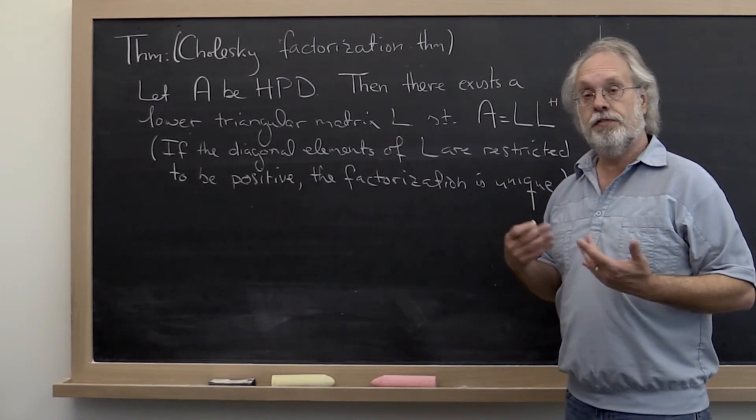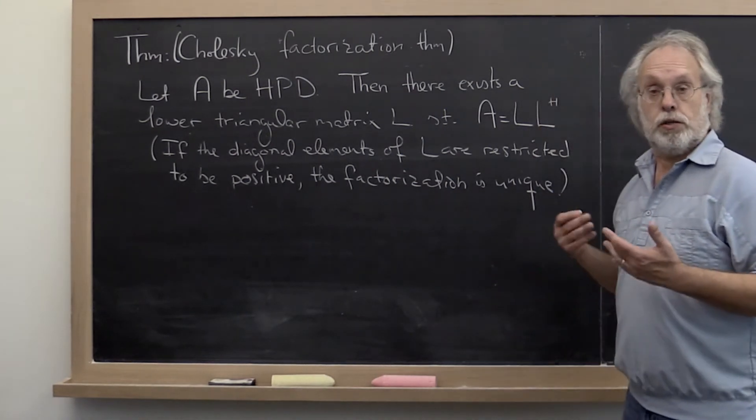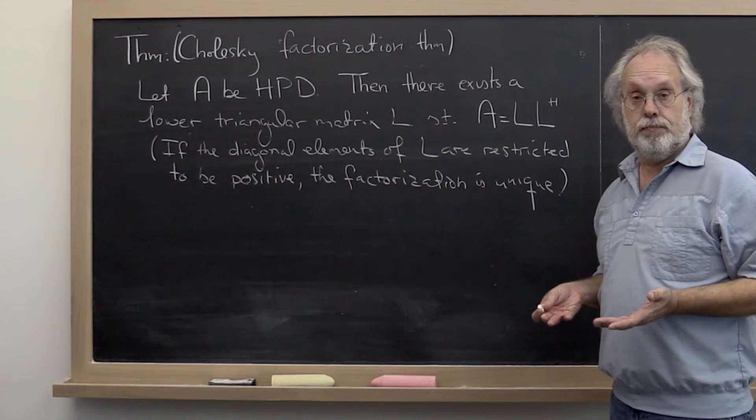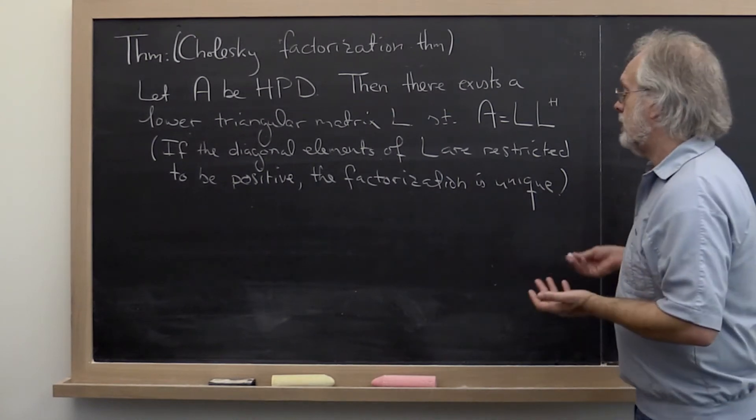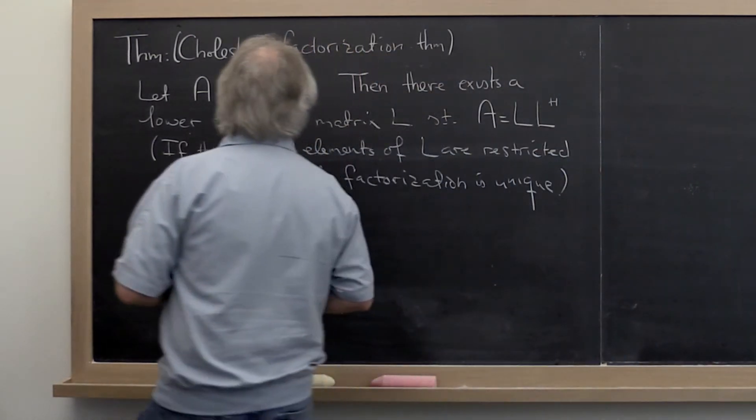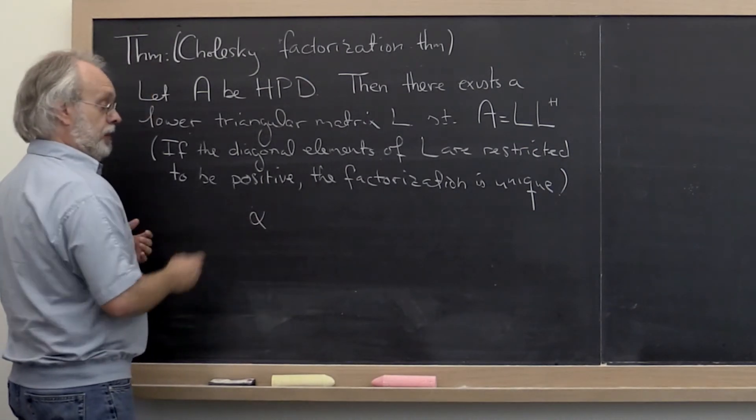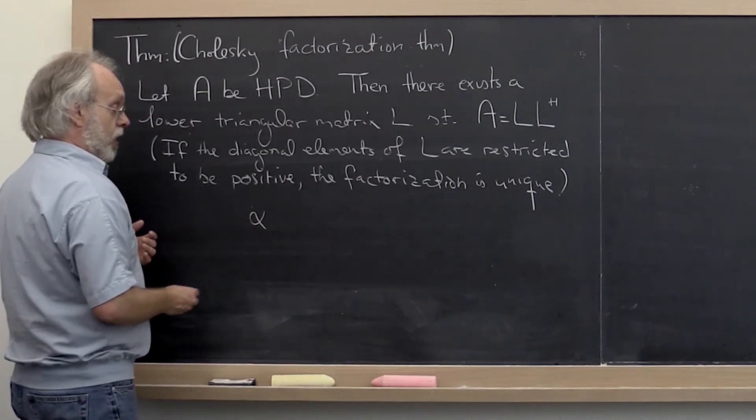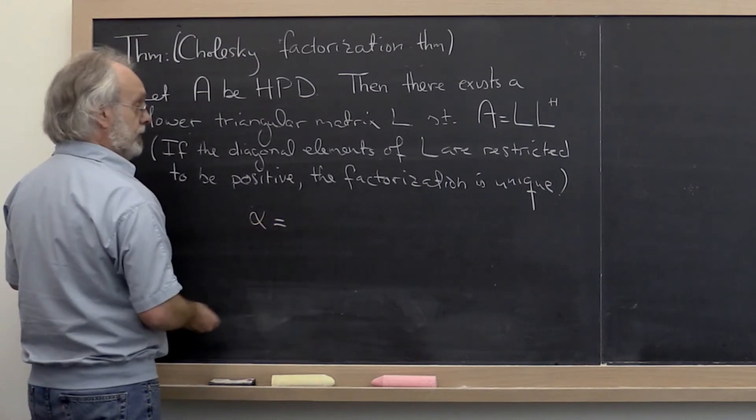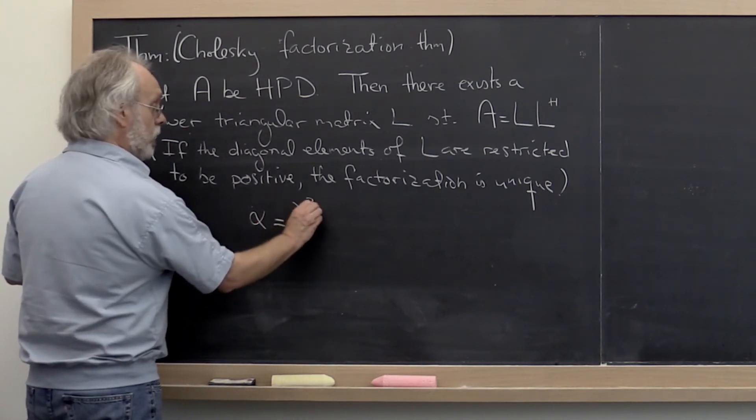Now this is very much like the square root of a matrix. If we have that alpha is a positive number, then we know we can write it as lambda squared.